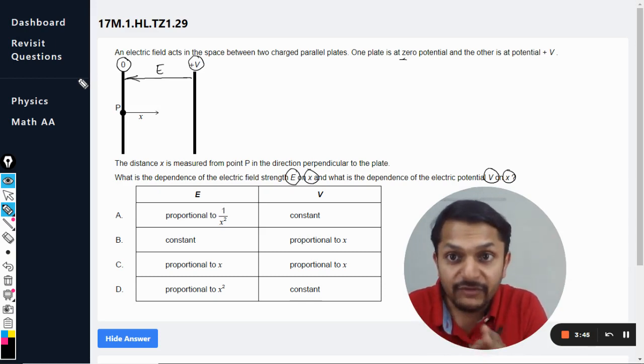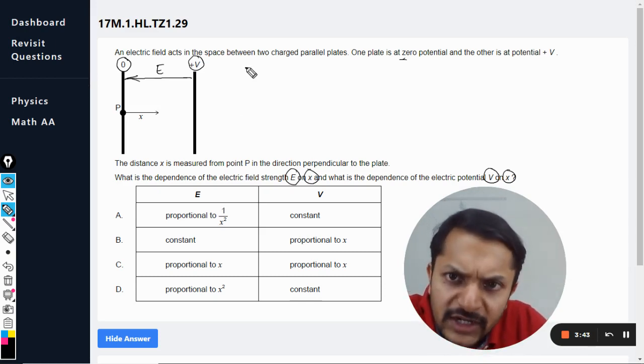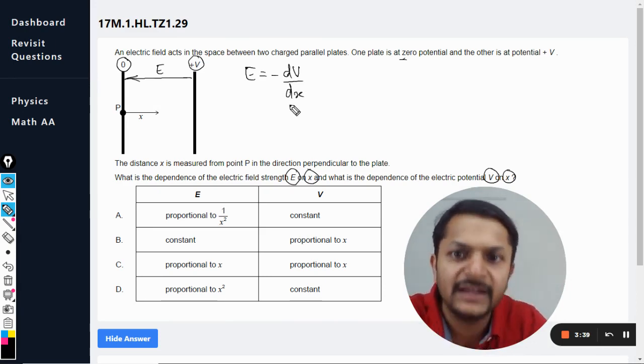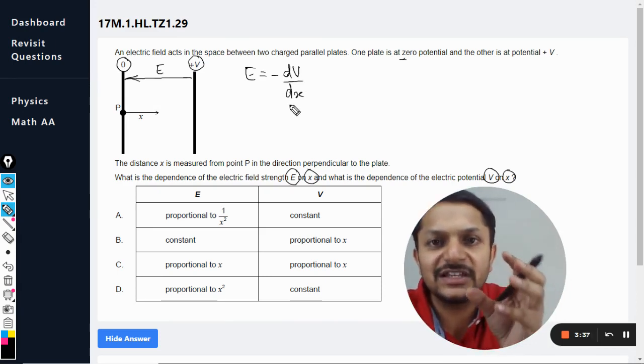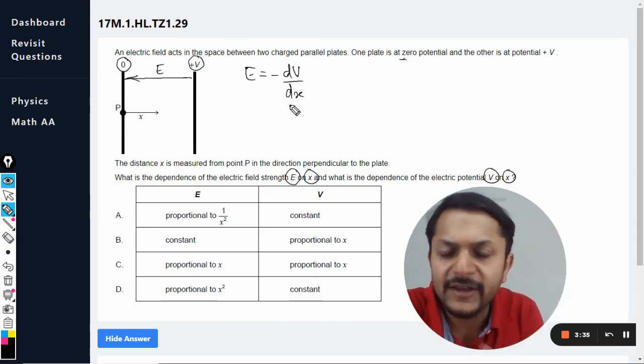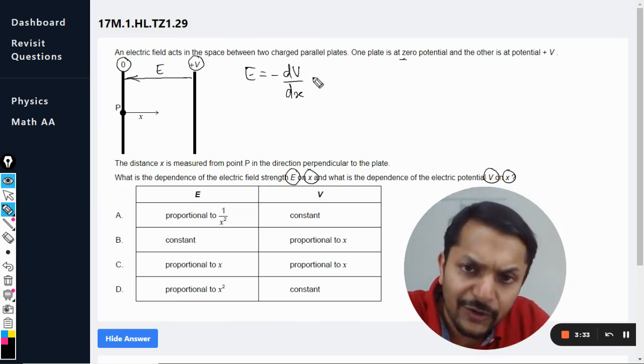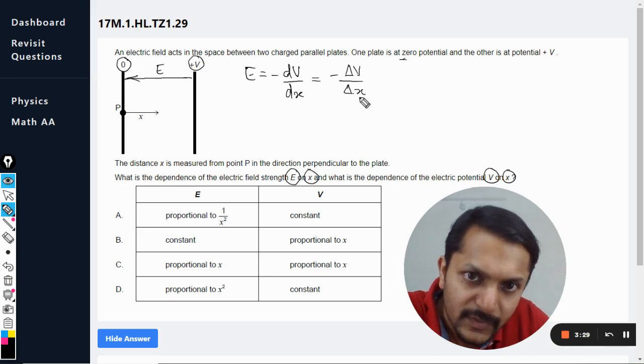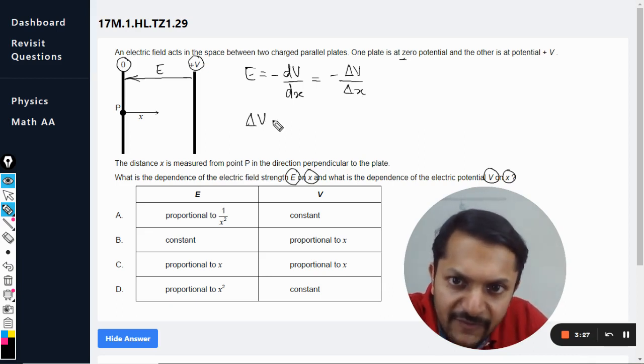Now what is the variation? We will see. So we know that there is a formula E is equal to minus dV divided by dx, where dx is the small distance that it is traveling. Anyways, we are not going into calculus here, so we can convert them into deltas.